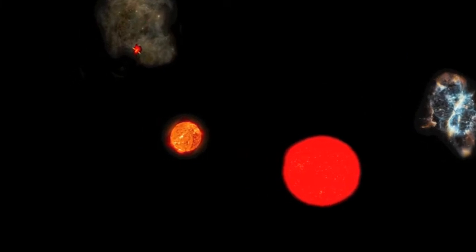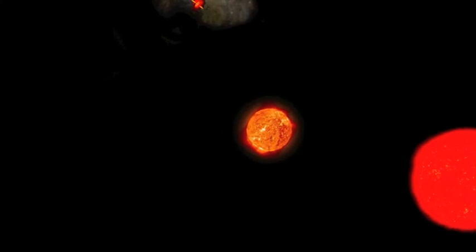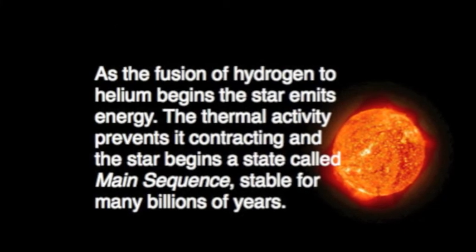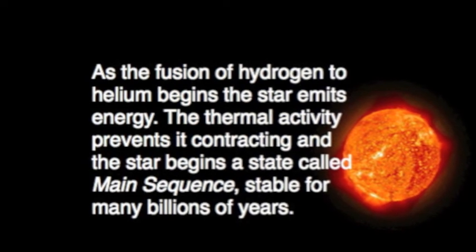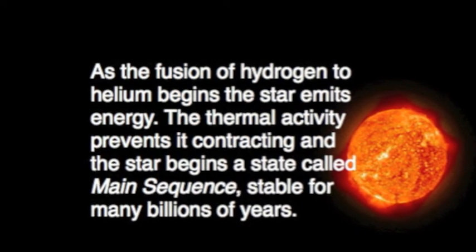The star of one solar mass, that is the same size as our sun, will remain in the main sequence for about 10 billion years until almost all of the hydrogen has been fused to form helium. That's about 90% of its whole life.